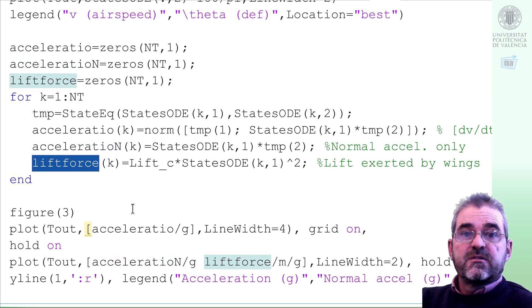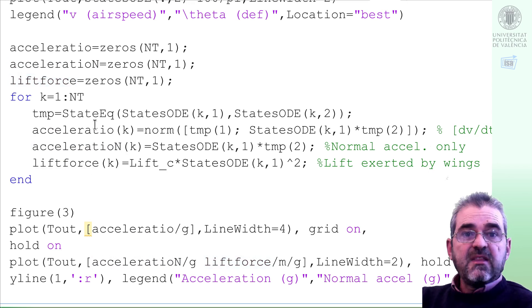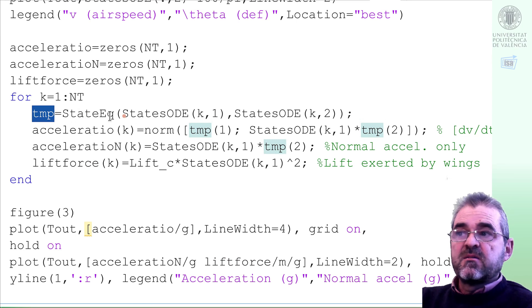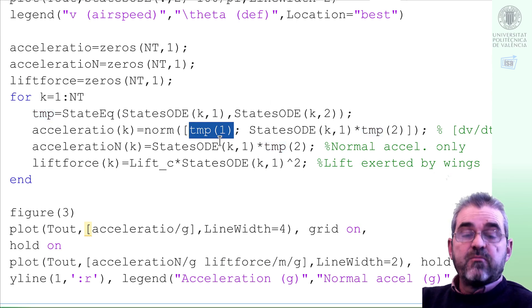If the lift force, which must be provided by the wings, is excessive, the wings may break. So, how do we compute the accelerations? Well, we'll first compute a dummy temporary variable, providing me the four state derivatives. And basically, the tangential acceleration is the first component.